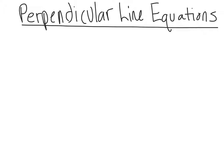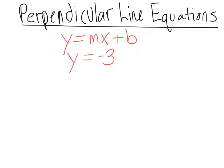What we'll do is start with a basic equation in slope-intercept form. Slope-intercept form is y equals mx plus b. You want to make sure that you have your equation in this form. I'm going to give you an equation in this form — I'm just going to make one up. y equals negative 3x plus 6.